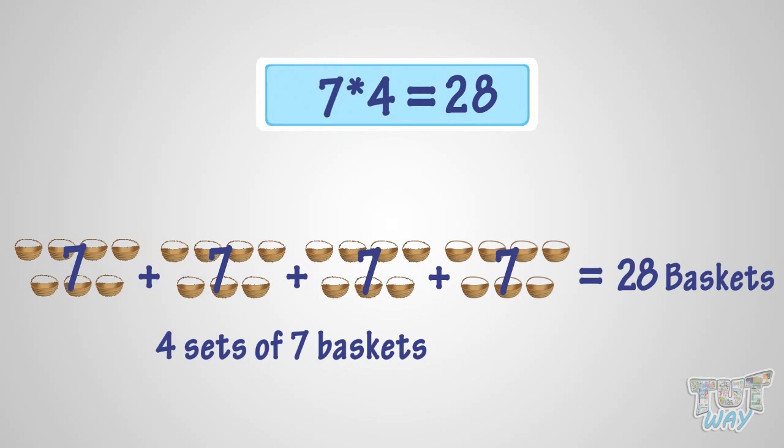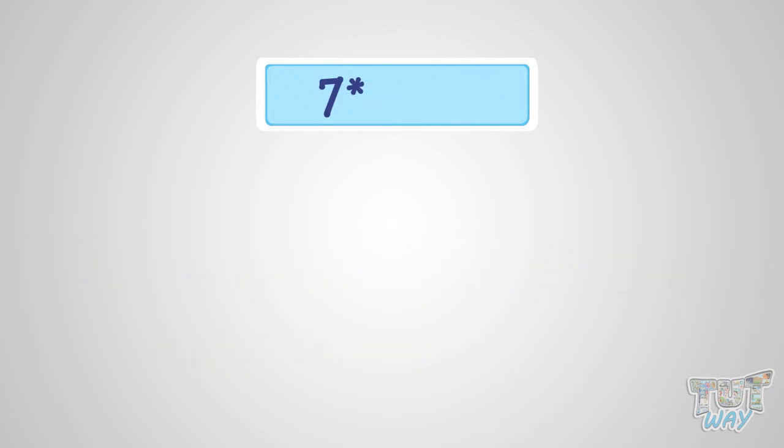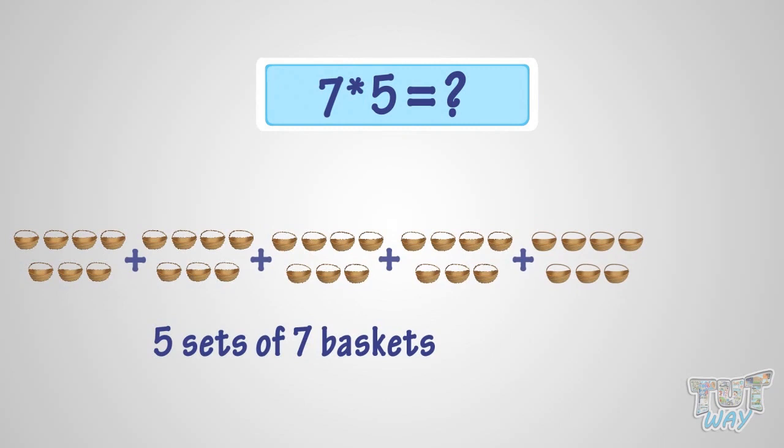What is 7 multiplied with 5? It is the same as five sets of 7 baskets. That is, 7 multiplied by 5 is 35.